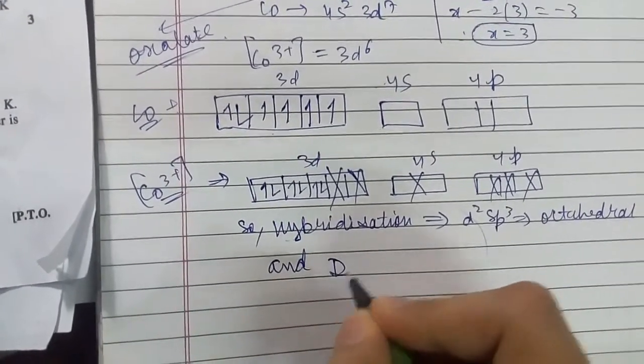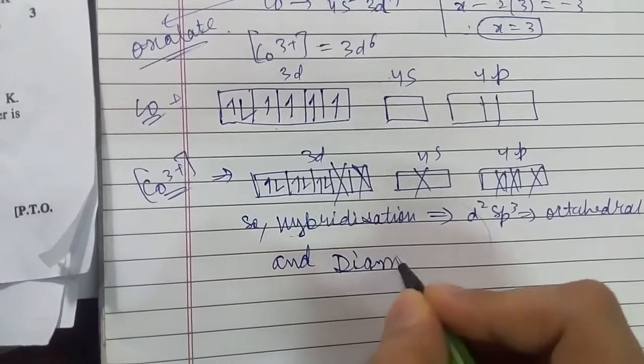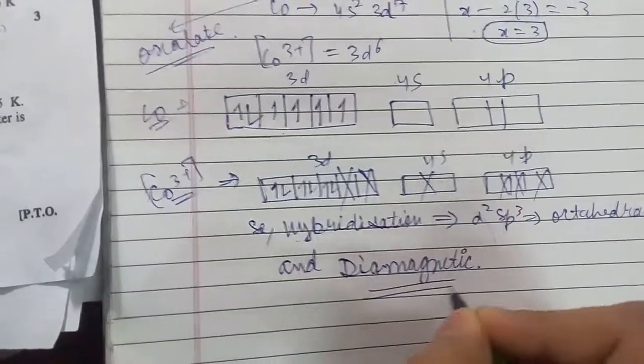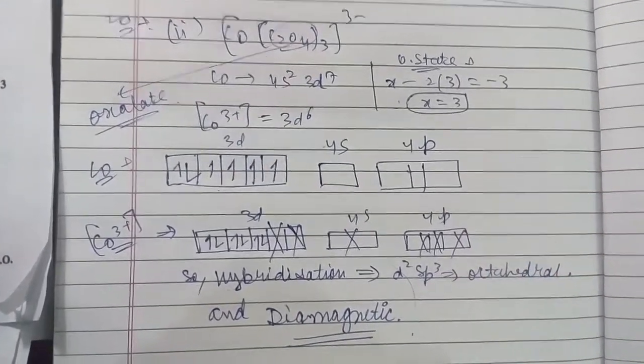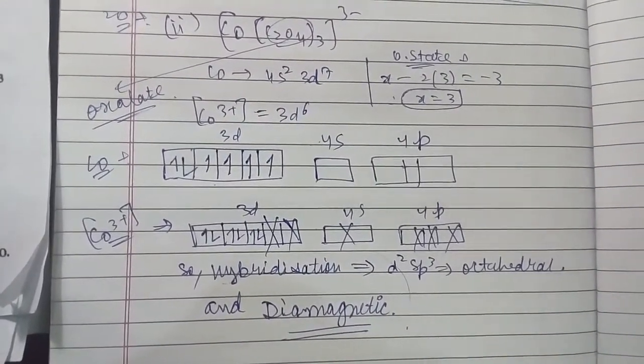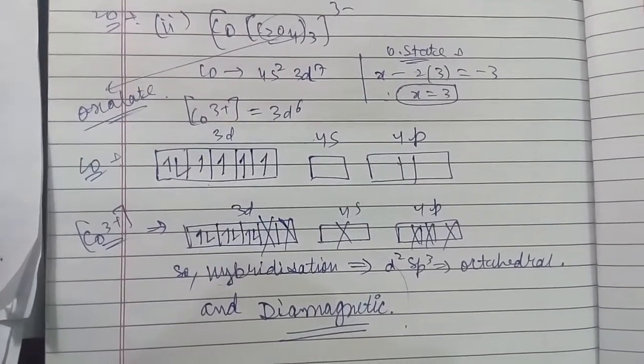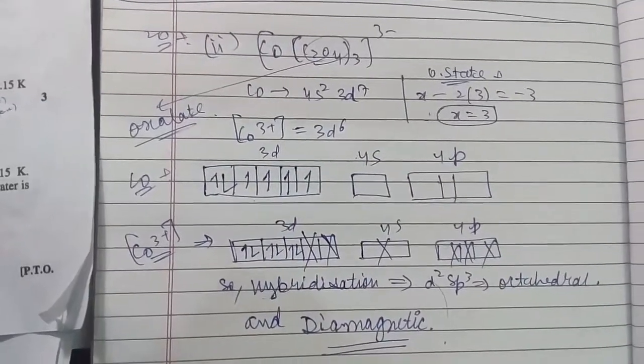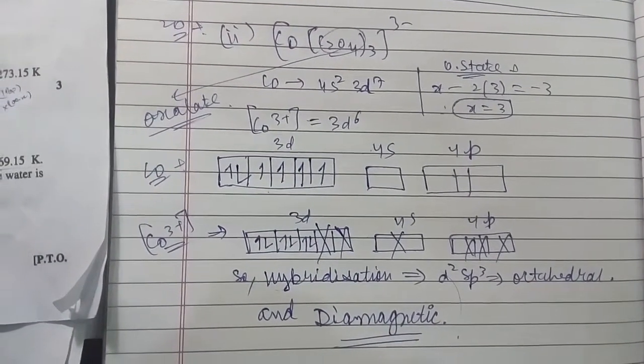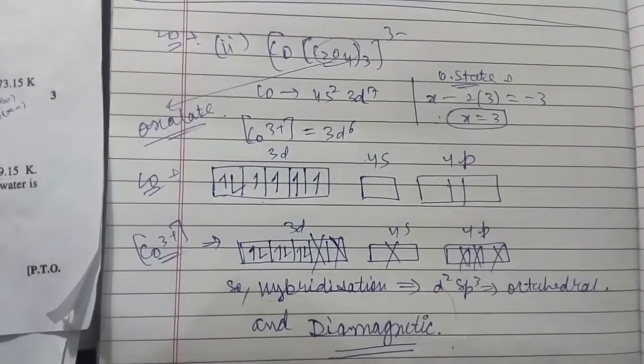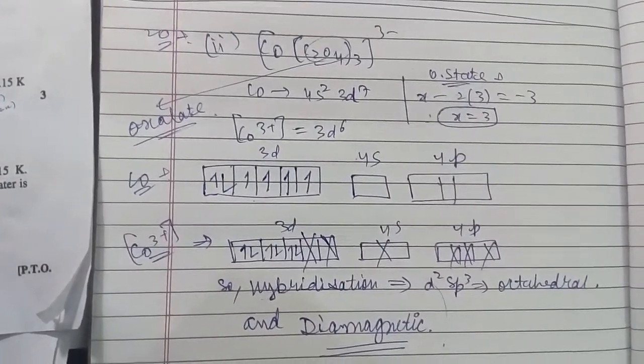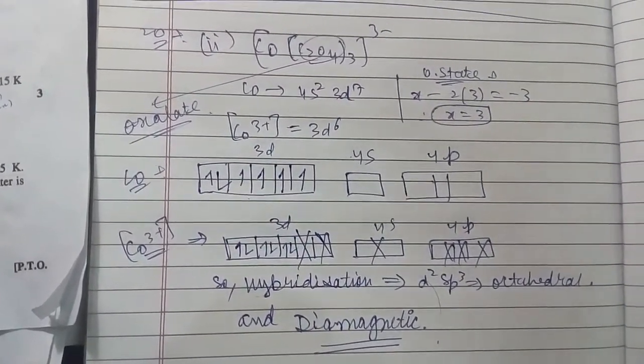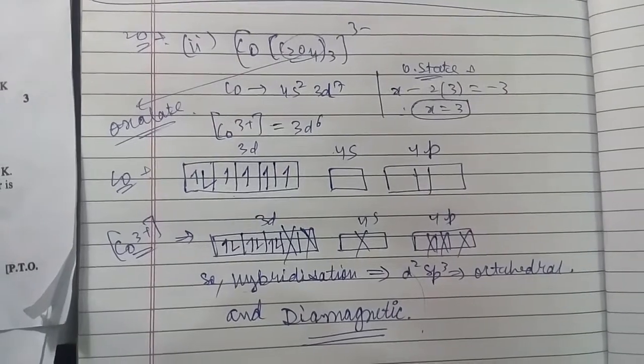This question is very important and in some books it is given as an exception case. Because oxalate in the compound with cobalt, sorry carbonate compounds, behaves as an exceptionally strong field ligand. In other compounds it is a weak ligand, but in this question it behaves as a strong field ligand. Thank you for watching, please like.